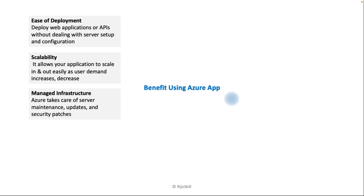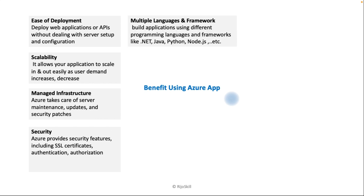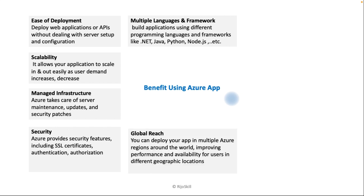Next is security — Azure provides security features including SSL certificates, authentication, and authorization. Next is multiple language and framework support — you can build your application using different programming languages and frameworks like .NET, Java, Python, Node.js, and more.